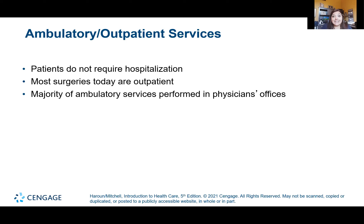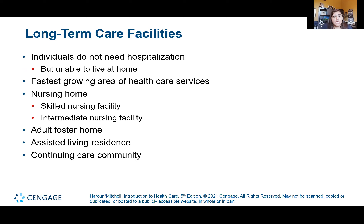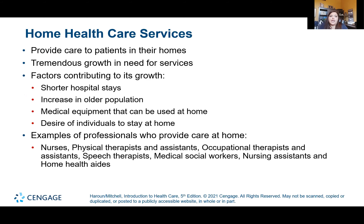My mom had a hip replacement done outpatient — surgeries where people used to be in the hospital for a week or more now happen in a day. A lot of ambulatory services are also provided by physicians' offices. Long-term care facilities are for patients who don't need hospitalization but can't go home yet — this is a huge area of growth. There are different types: nursing homes, adult foster homes, and assisted living, where someone checks on residents and makes sure they get their medications.